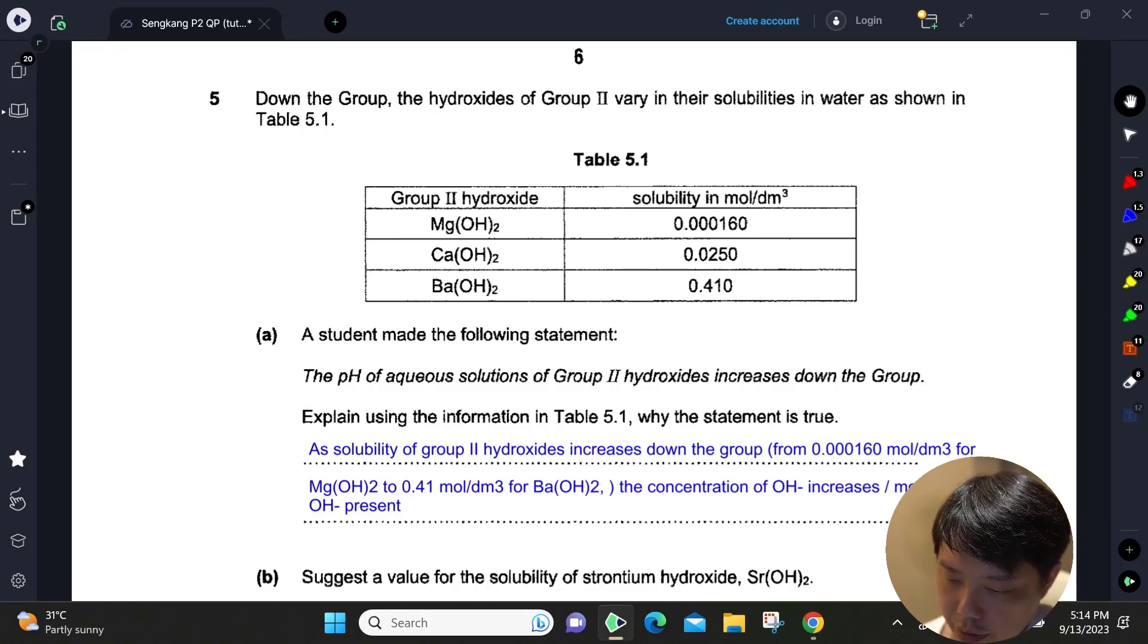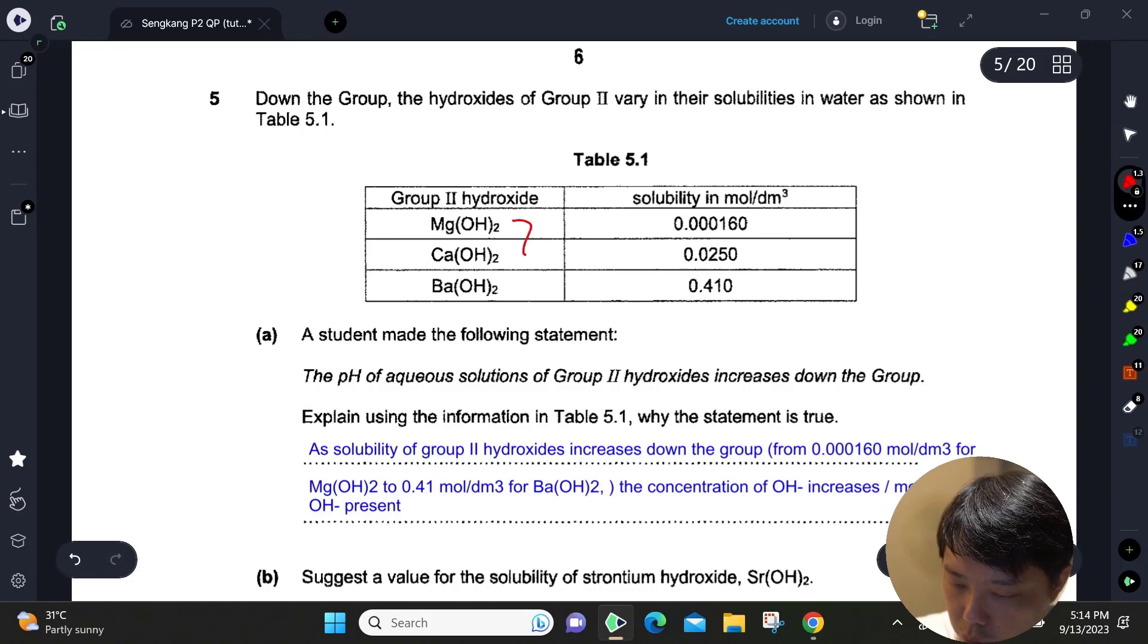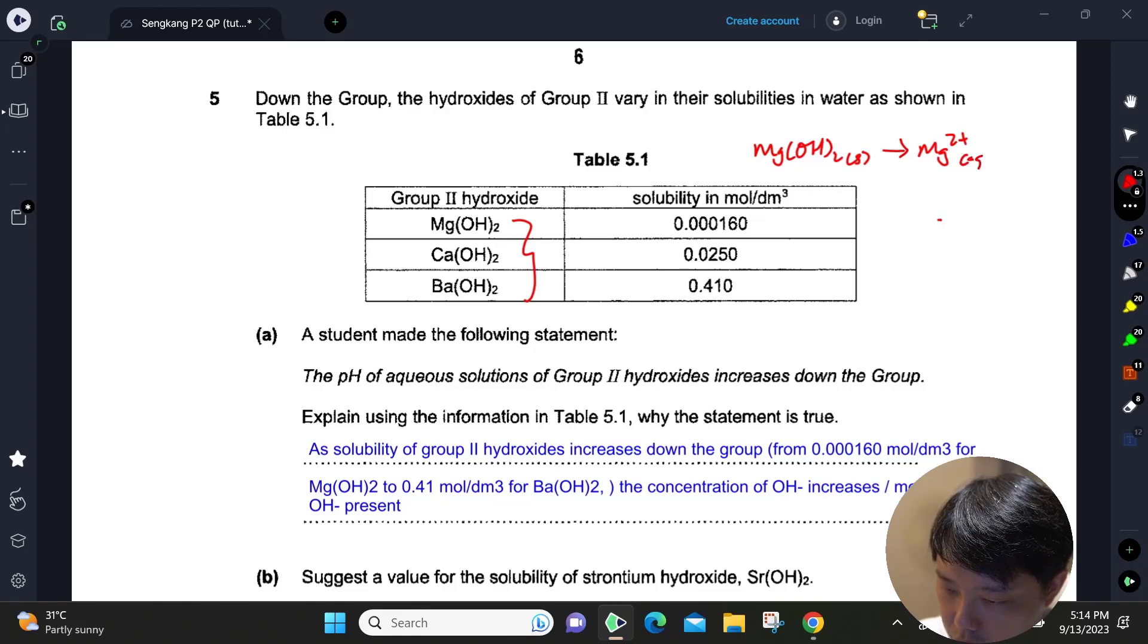The more this Group 2 hydroxide dissolves—for example, Mg(OH)₂ from a solid dissolves to form Mg²⁺ aqueous plus 2OH⁻ aqueous—the OH⁻ will be the one that's affecting the pH.